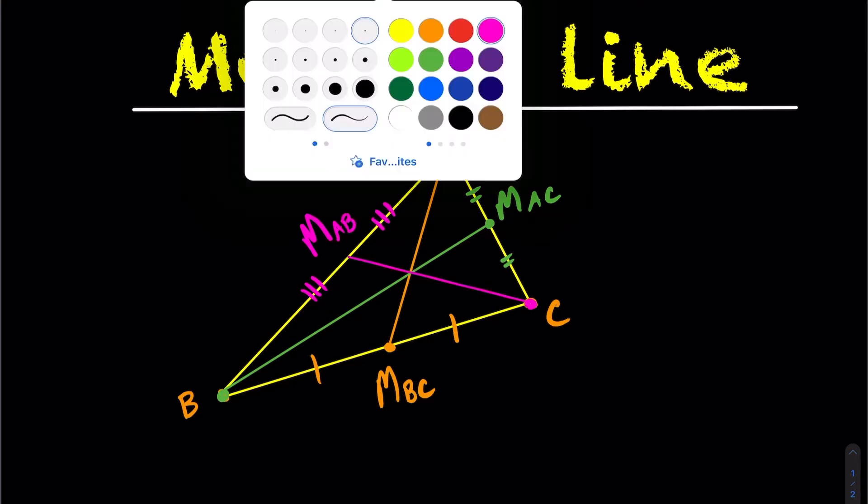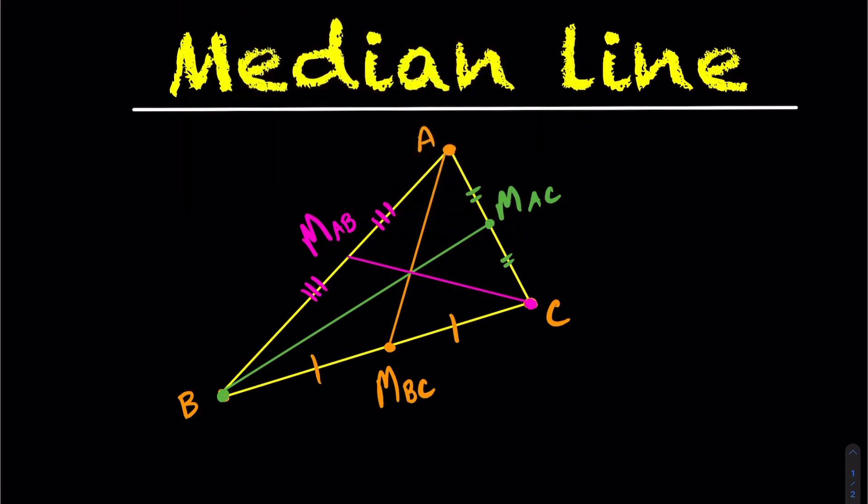Now notice here, I crossed all three of these lines at the exact same point, and that's a special characteristic that happens with median lines, and this is a very special point that we're going to talk about later in a later video. But what's important here in our focus for today's lesson is what is the median line? A triangle has three different median lines.